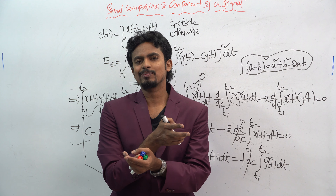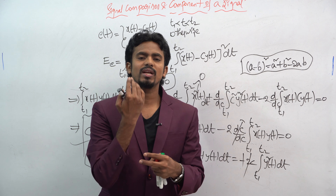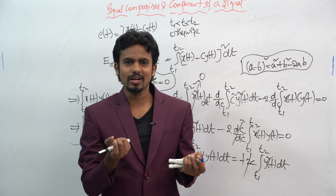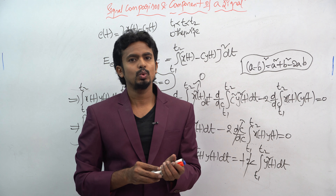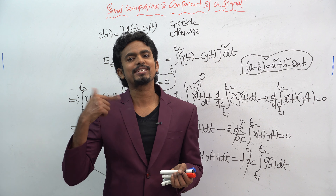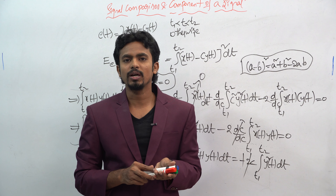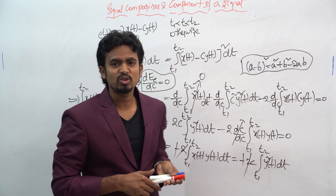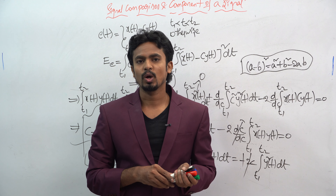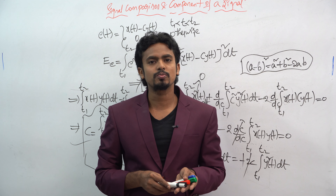In the next class we will conclude what is meant by orthogonality and how the 90-degree relationship is present, as well as what happens with the complex conjugate. We will also cover orthonormality, and once these concepts are concluded we will start the Fourier series. If you liked this video, please like, share, and subscribe to the YouTube channel. Thank you.